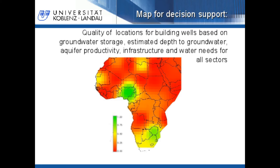This is the result of the project. This map shows the quality of locations for building wells based on groundwater storage, estimated depth to groundwater, aquifer productivity, infrastructure, and water needs for all sectors. Green denotes a good location for building wells and red denotes a bad location for building wells. This map can be used for decision support.